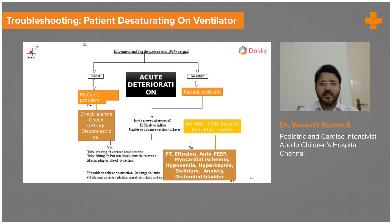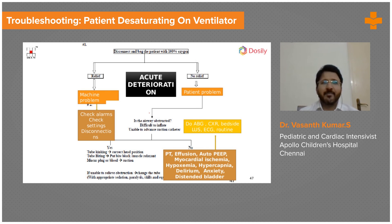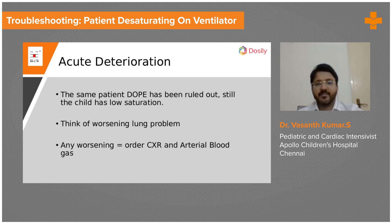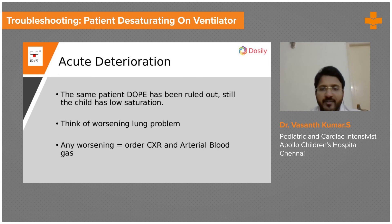In summary for acute deterioration: take the patient on a bag. If the patient improves, it is a ventilator problem. If not, identify whether it is a patient problem such as tube kinking, tube biting, mucus plug due to secretions, pneumothorax, or worsening lung disease — where the patient is gradually worsening over time rather than an acute event. Always when a patient deteriorates, make it a habit to do a blood gas and an X-ray. In adults, ECG and echo should also be done immediately. When the patient deteriorates acutely, if you have ruled out DOPE and the patient still has low saturation, assume it is probably due to worsening lung problem and always do a chest X-ray and blood gas.